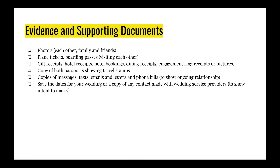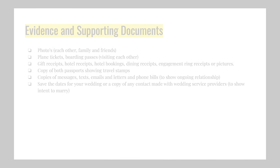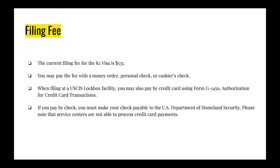Another example is a save-the-date for your wedding, or any contact made with wedding service providers, to show that you intend to get married as soon as your fiance enters the US. The filing fee for the K-1 visa is $535. You can pay with a money order, personal check, or cashier's check.